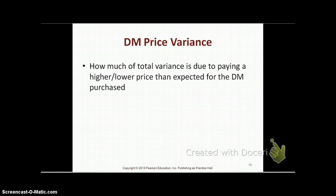The direct material price variance calculates how much of the total variance is due to paying a higher or lower price than expected for the direct materials that you purchase. For example, when we calculated the standard cost of a Starbucks cup of coffee, we said we expected to pay $0.07 for the two teaspoons of standard quantity required. However, because of general market conditions, the price of coffee went up and Starbucks ended up paying $0.09 for those two teaspoons — a higher price than budgeted.